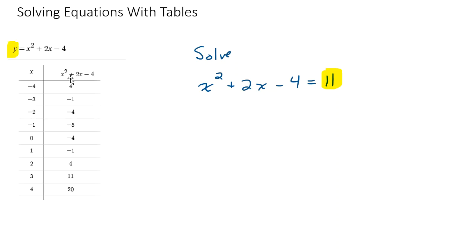So I'm looking down my y column for 11, my output column. These are my y values, and I see one right there. Awesome. So I have a solution, which is three, and I'm feeling pretty good about that. x equals three, and I go on and I'm done.